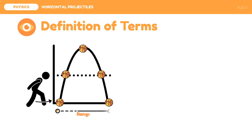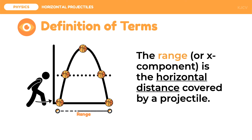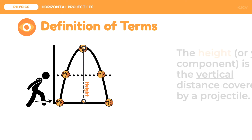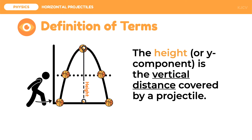Next, we have range. The range, or x component, is the horizontal distance covered by a projectile. In other words, the range is the distance from the point of release up to the landing point. Lastly, we have height. The height, or y component, is the vertical distance covered by a projectile.